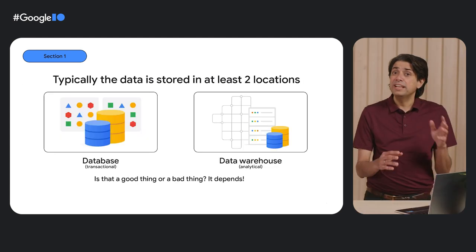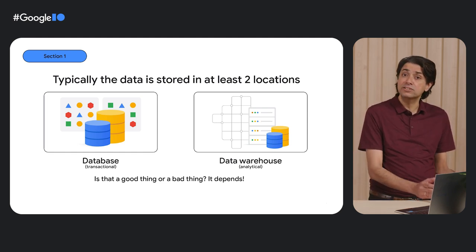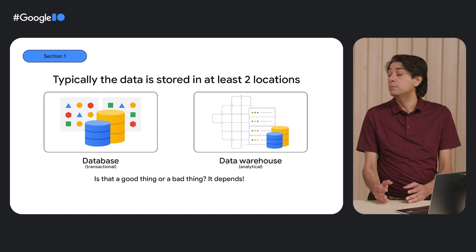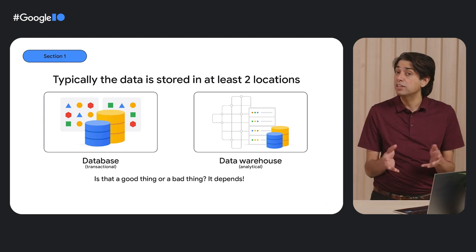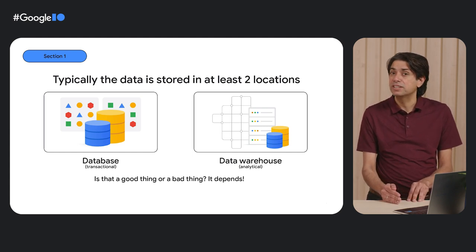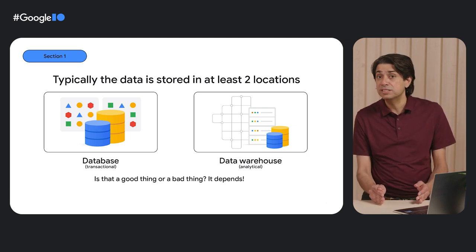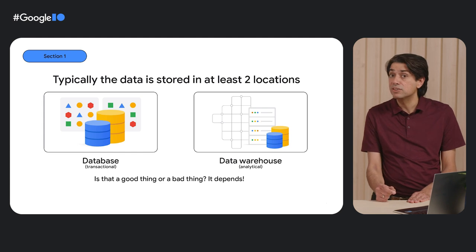If you look at where the data is coming from today, traditionally developers had to work with two separate types of stores: one for handling transactional applications that run the business, and the other is a data warehouse to provide insights on how well the business is doing. And what about data lakes and lake houses and object storage? There are many places where data could be, but let's start by focusing on the very common scenario we have here. It actually works pretty well, but it also comes with the overhead of managing, monitoring, and keeping these stores in sync — and let's not forget about security. But with the advancement in cloud technologies, the boundaries between these stores are blurring, and that provides us the opportunity to make things easier for our customers.